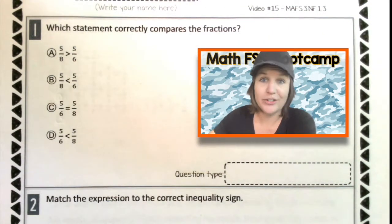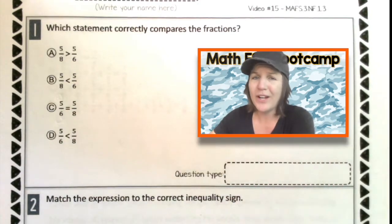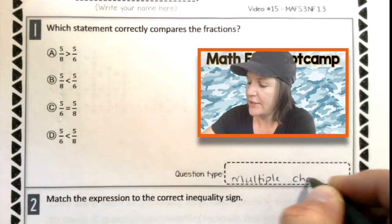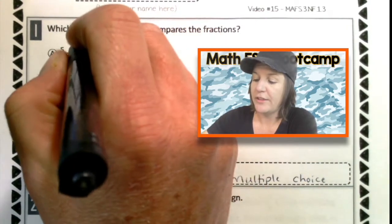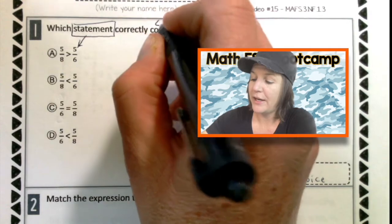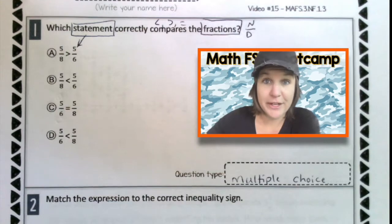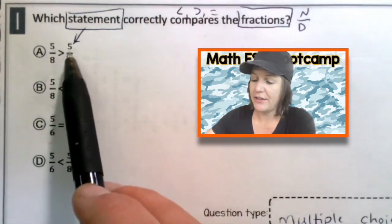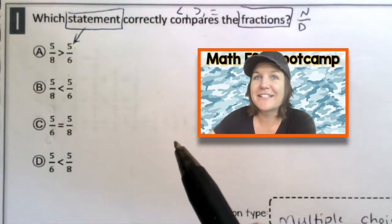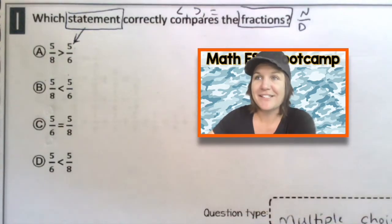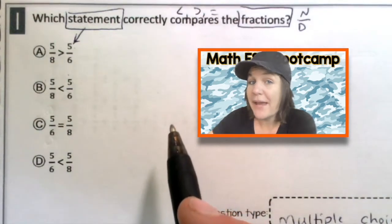All right, third grade, welcome back. Let's go ahead and check your work. So the very first thing that we need to pay attention to is this question type right here. So I'm seeing one, two, three, four answer choices. So what kind of question is this? It's a multiple choice question. Jot that down if you did not already. Now that we know it's a multiple choice question, let's read and mark up our text. So it says which statement, they're calling it these, the statements down here, correctly compares, that means that we're looking for less than, greater than or equal to the fractions. And fractions, we have a numerator and a denominator. So I am seeing the fraction five eighths and five sixths for each.